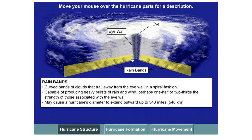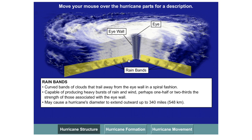Finally, running all along the base of the storm, you get the rain bands. These tend to curve around in a spiral fashion. They're capable of producing heavy bursts of rain and wind, and they can extend outwards from the eye of the storm sometimes as much as 550 kilometers.